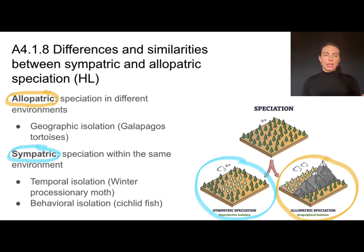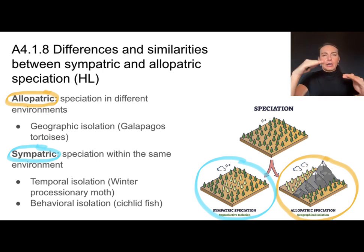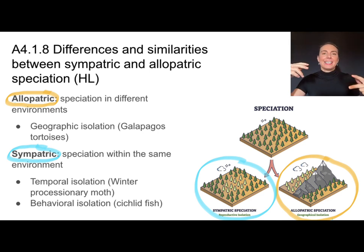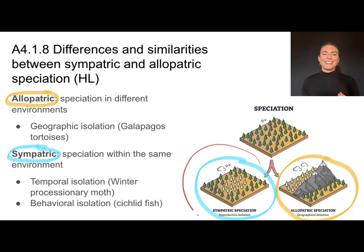Sympatric speciation can also be behavioral — some kind of behavior separating two groups. A lot of times this involves different mating rituals, or in the example of the cichlid fish, preferring different levels or depths of water. That behavior is likely to attract different mates. The key point is that reproductive isolation can be caused by something physical or something non-physical.